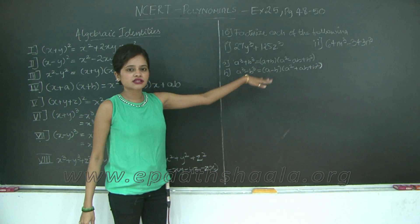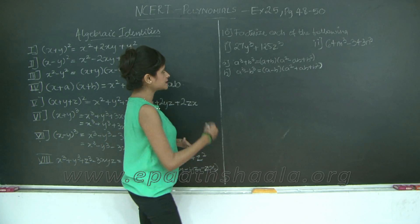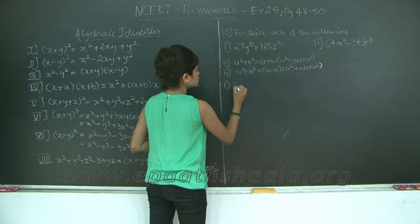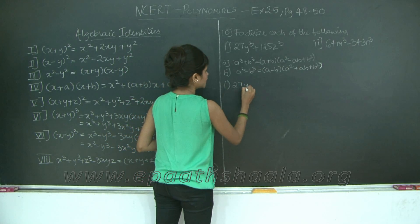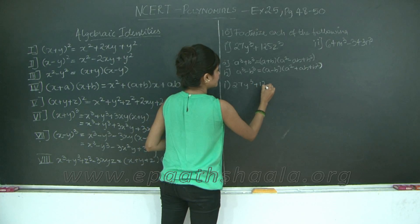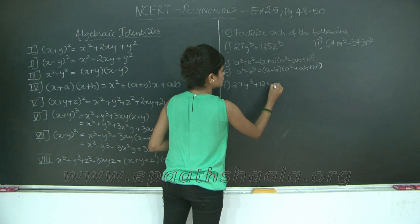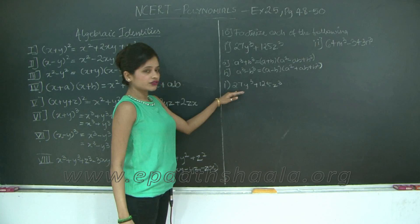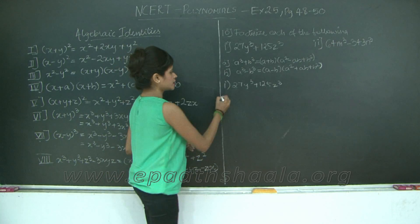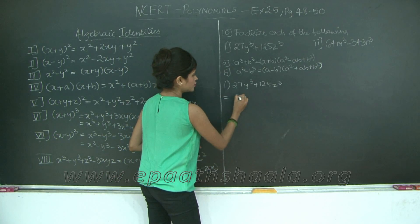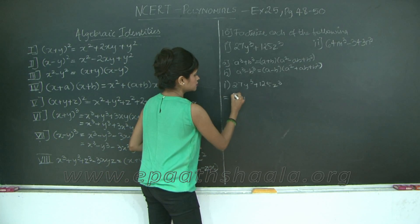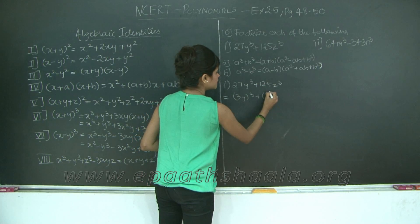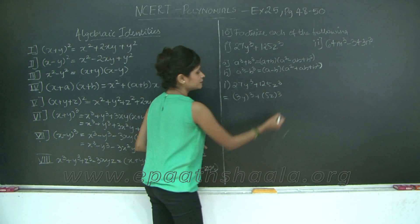We are going to use these formulas to solve our questions. Let's take a look at the first question which is 27y cube plus 125z cube. Now, we can rewrite this question as 3y the whole cube plus 5z the whole cube.